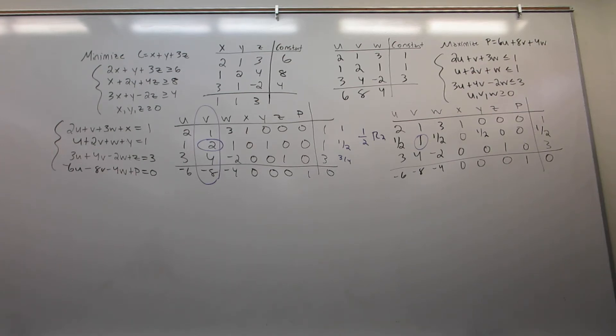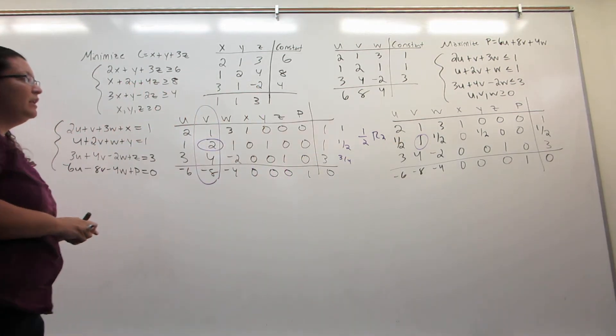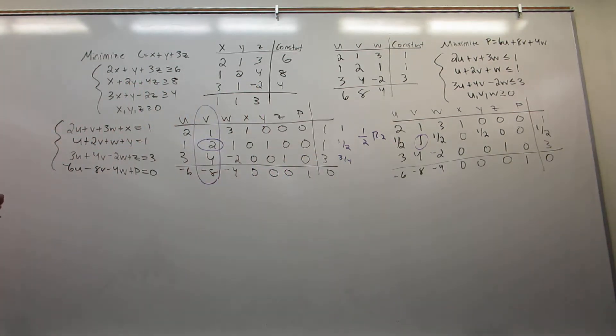So again we're solving a standard minimization problem using the simplex method by solving the dual problem. We identified our pivot position and turned it into a 1, and now we need to get zeros everywhere else in the column. So to fix the first row it's going to be R1 minus R2. To fix the third row it'll be R3 minus 4R2, and to fix the fourth row it'll be R4 plus 8R2.